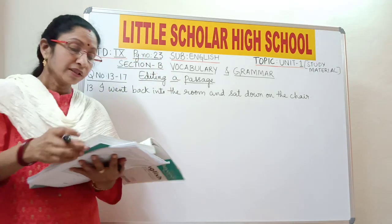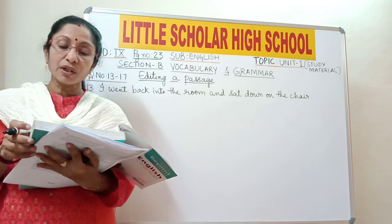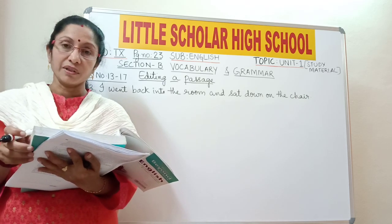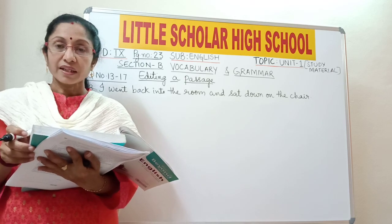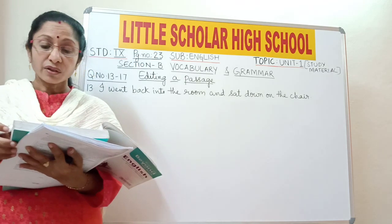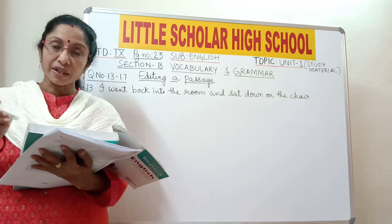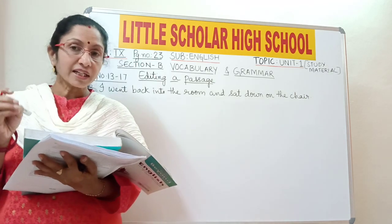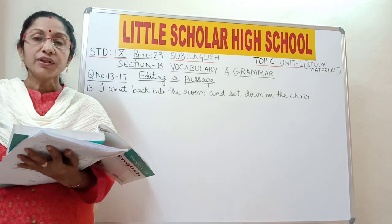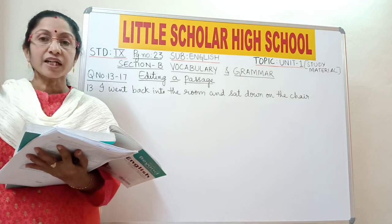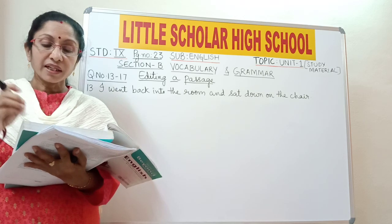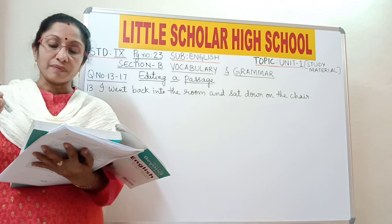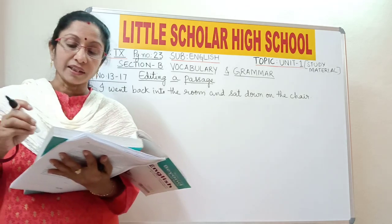Question number 14: 'I opened the box below the table and took out a book.' The word 'below' is the incorrect word here. The word 'below' is used for temperature or height — you can say above or below. But here you are talking about the position of a thing under the table, so we should use the word 'beneath' here.